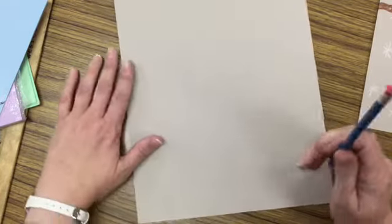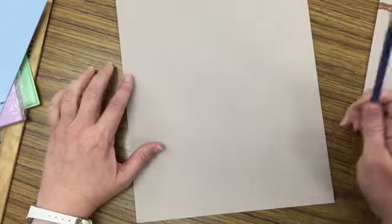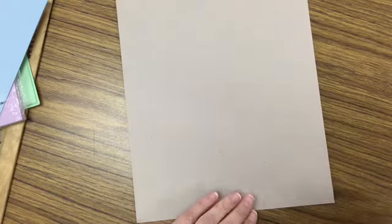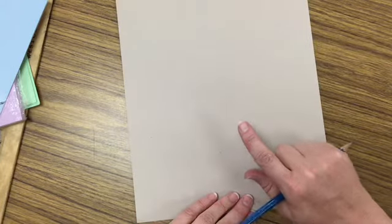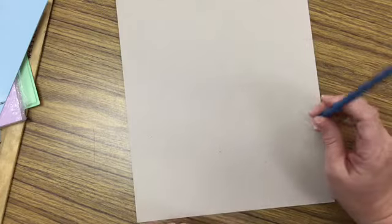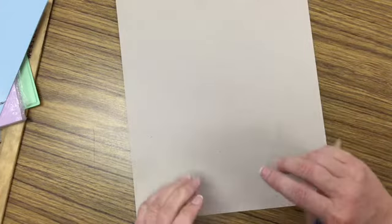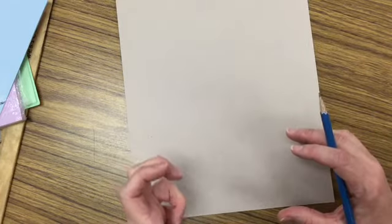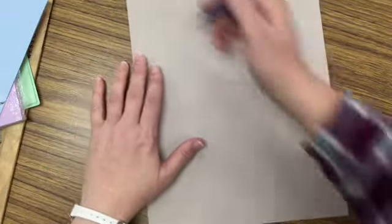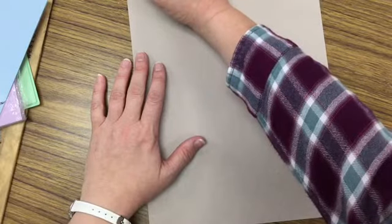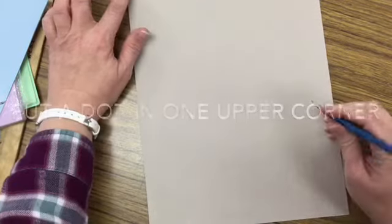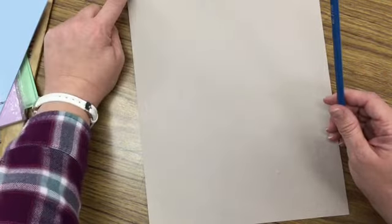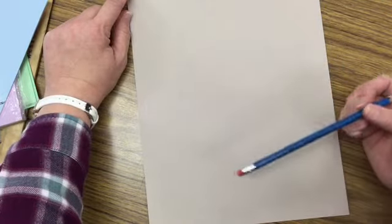So first things first, we're going to create some guidelines for our perspective. Now remember we're going to be like a worm looking up at the snowman. So if you think back to when we've done other projects, when things are closer to you they're going to appear larger, and when they get farther away they're going to get smaller. So what I'm going to do is I'm going to put a little dot up in this corner. This is going to kind of work as my vanishing point. Things will vanish at this point, although we probably won't be drawing all the way to the vanishing point.